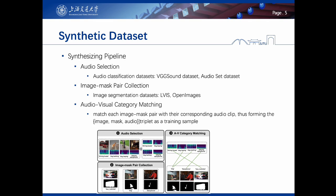For each triplet, the image and audio serve as model inputs, while the mask is the ground truth segmentation mask to supervise model training.